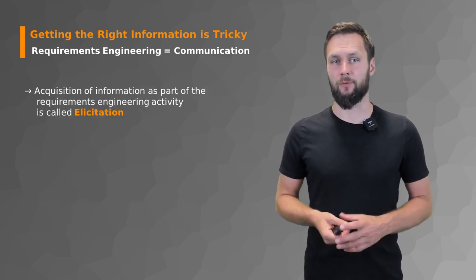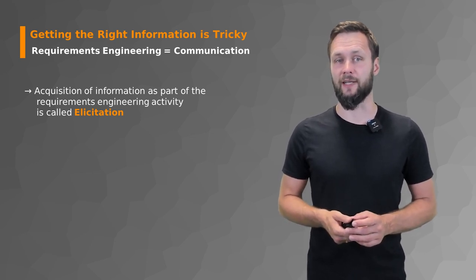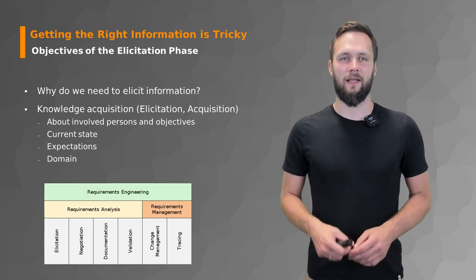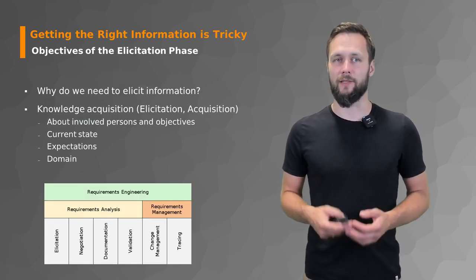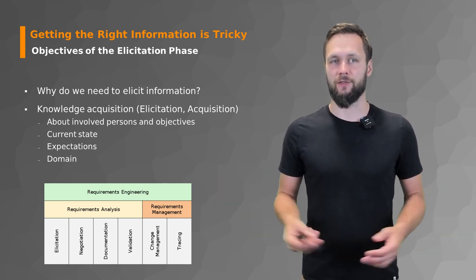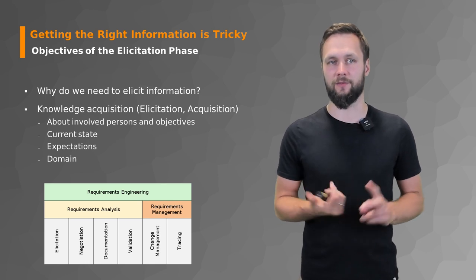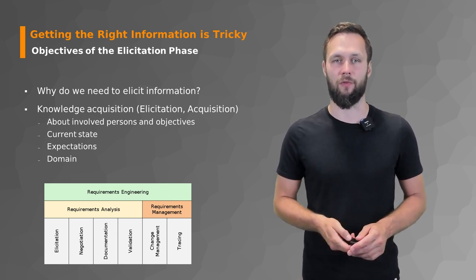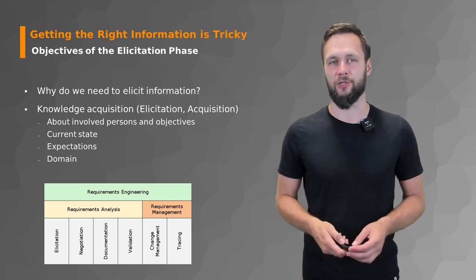Acquiring this information as part of the requirements engineering activity is called elicitation — getting the right information. The objective of the elicitation phase is to acquire all of that information: pretty much knowledge acquisition about involved persons and objectives, current state, expectations, domain, and many more things. It's also the first part of the requirements engineering process.